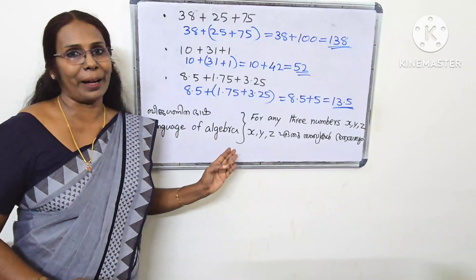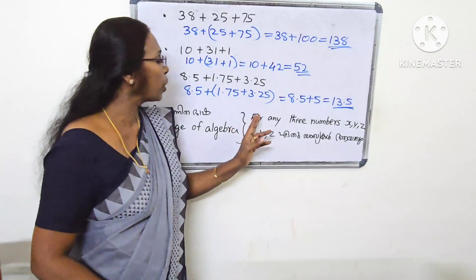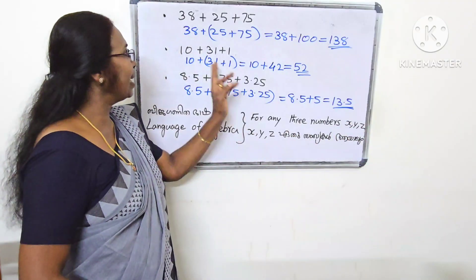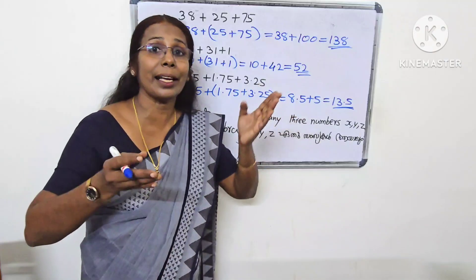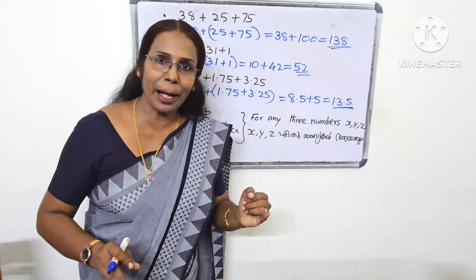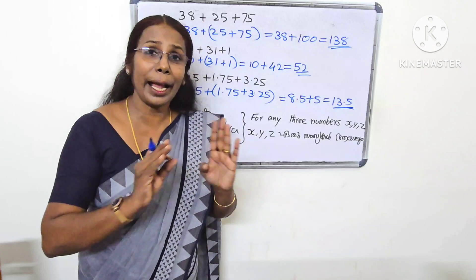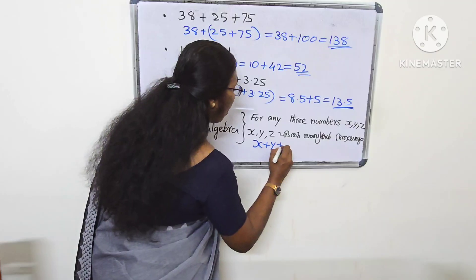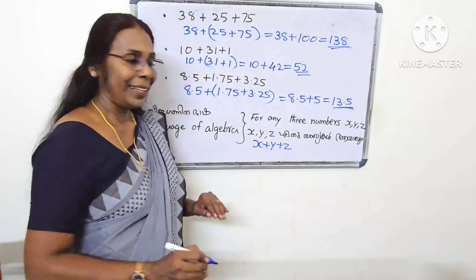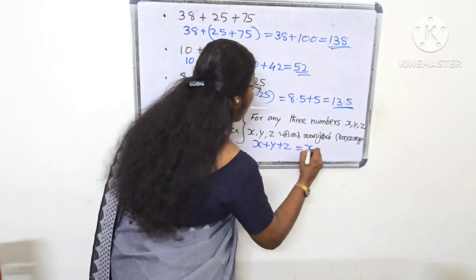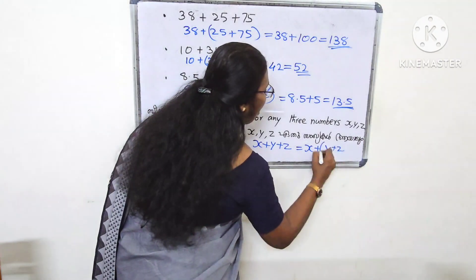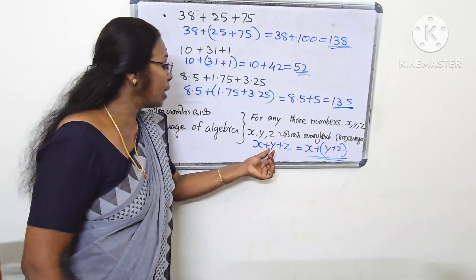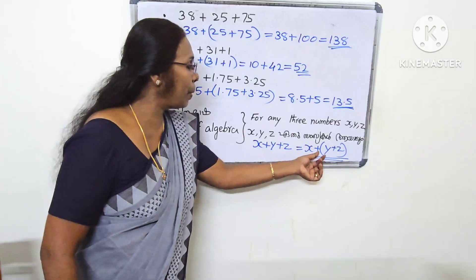The language of algebra. For any three numbers x, y, z — that's the word x, y, z. Now, x plus y plus z is equal to x plus y plus z. That's why we have two points.